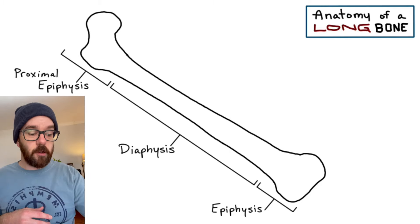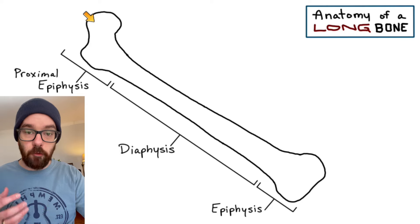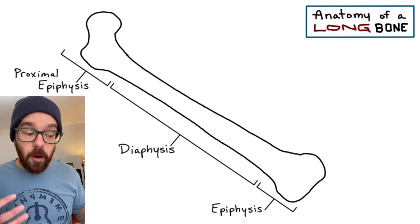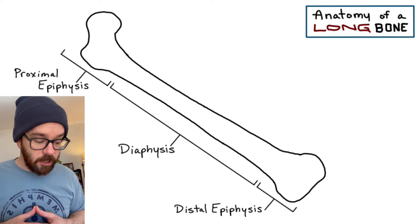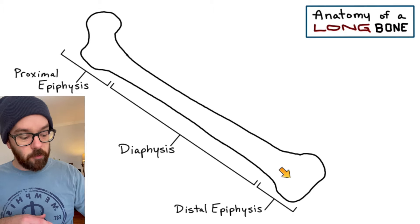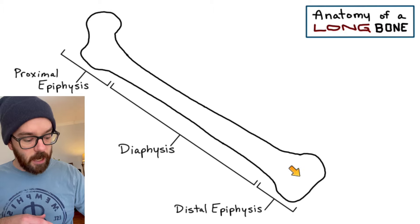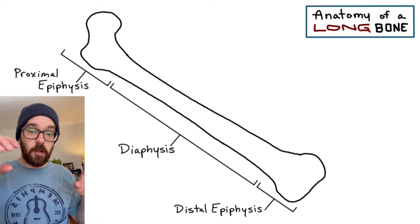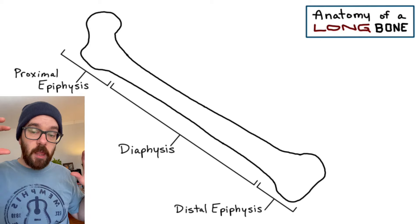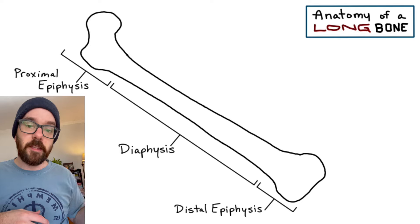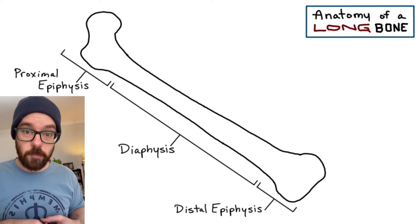In the case of the femur, the proximal epiphysis forms a joint with your pelvis to make your hip joint. The part of the bone farthest from that point of attachment is the distal epiphysis. In the case of the femur, this would be connecting with your knee — your kneecap or patella would be right in there, and then your tibia and fibula would be distal to that. So we have the diaphysis — the long shaft — and the two ends: the proximal epiphysis, closest to the point of attachment, and the distal epiphysis, farthest from it.